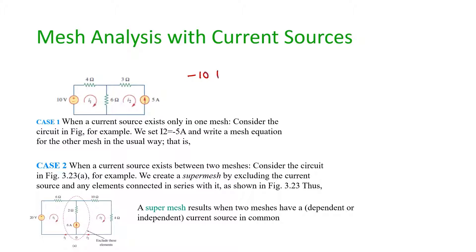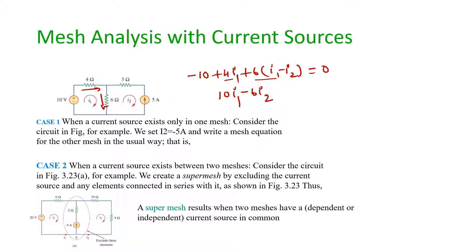Applying KVL at loop 1: minus 10 plus 4 I1, then 6 ohm with current (I1 minus I2) is equal to 0. So you get 10 I1 minus 6 I2 equals 10. Taking 2 as common: 5 I1 minus 3 I2 equals 5. This is equation 1.